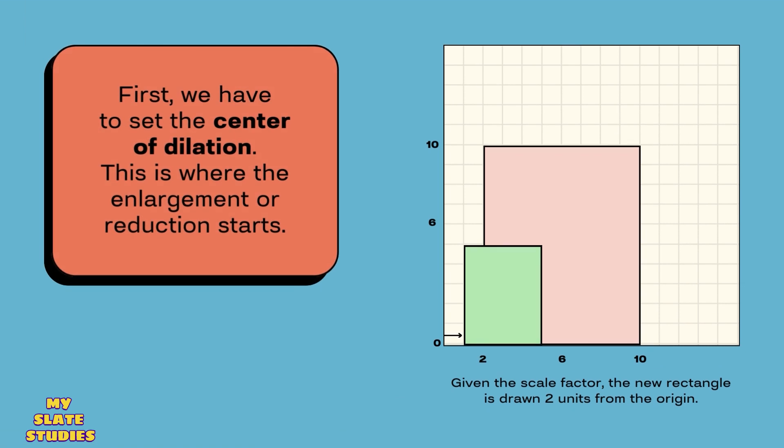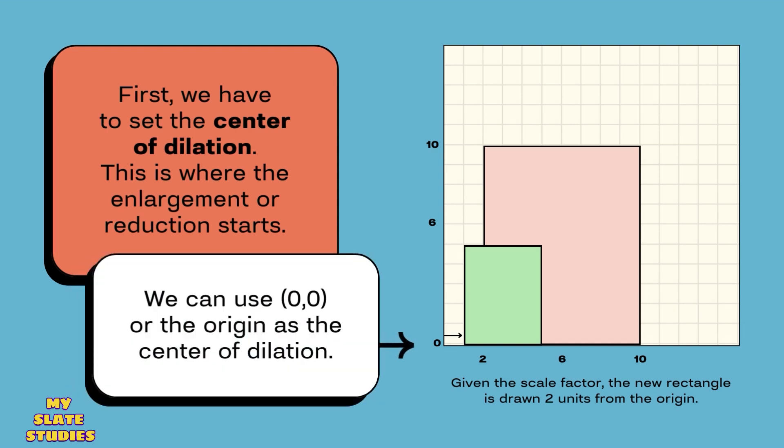If the center of dilation is at a point (h, k), then the coordinates (x, y) of the original figure are transformed to (h + x, k + y) for the dilated figure.